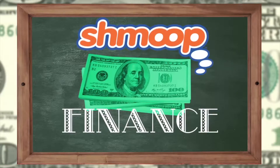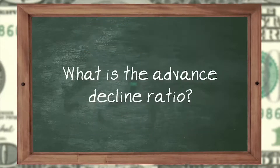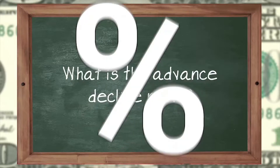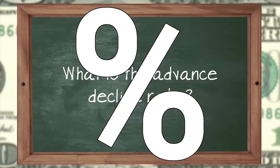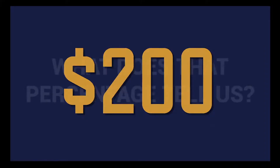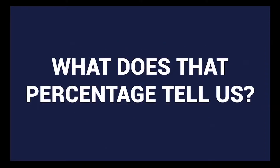Finance a la Shmoop. What is the Advance Decline Ratio? It's just a percentage, just like all its brethren or fellow ratios. But what does that percentage tell us? What's that ratio all about?